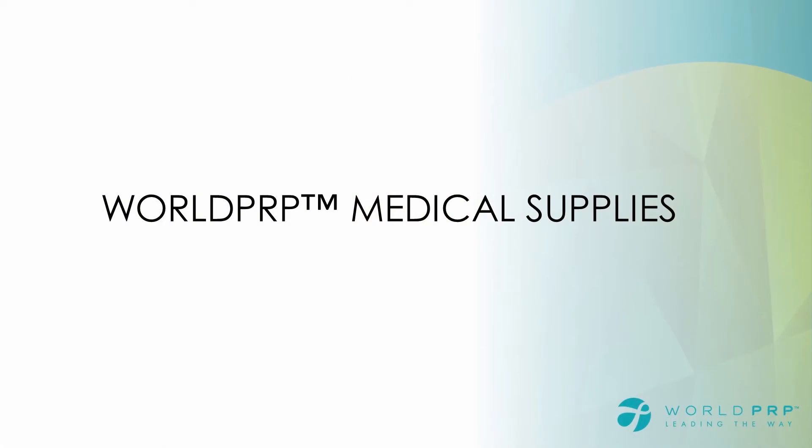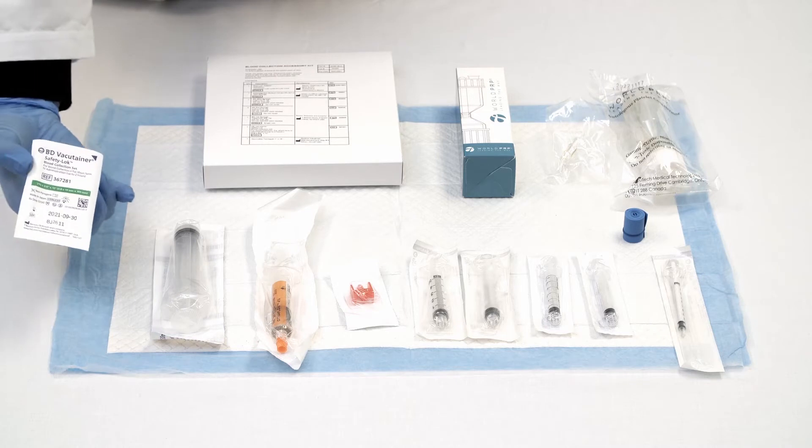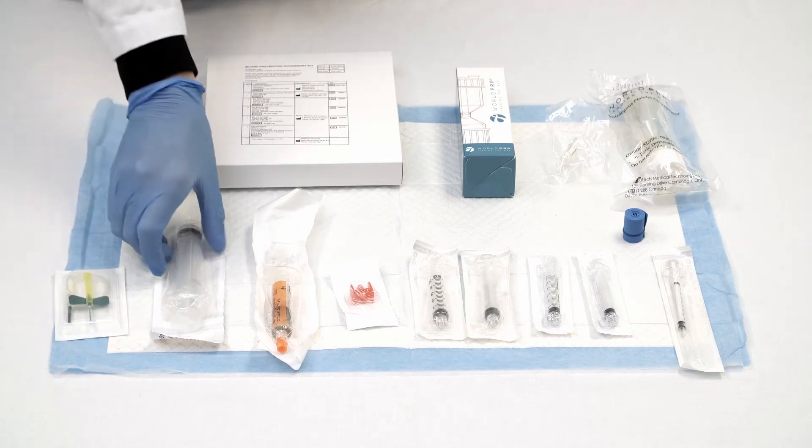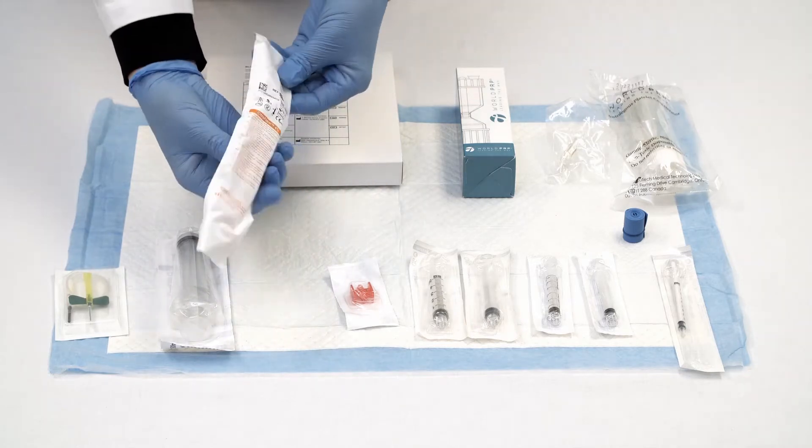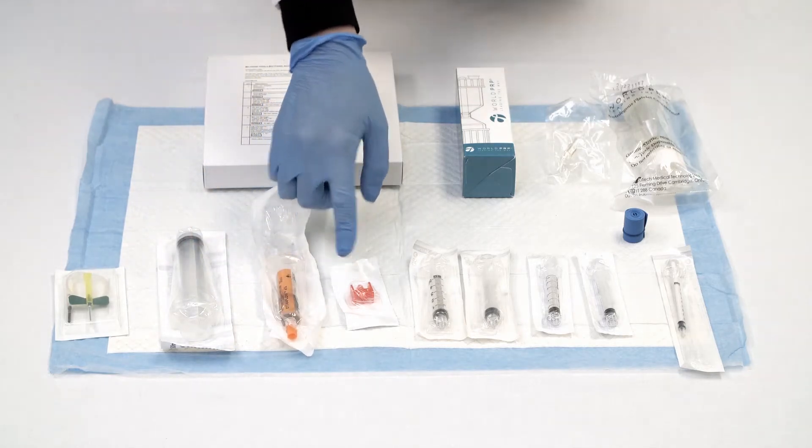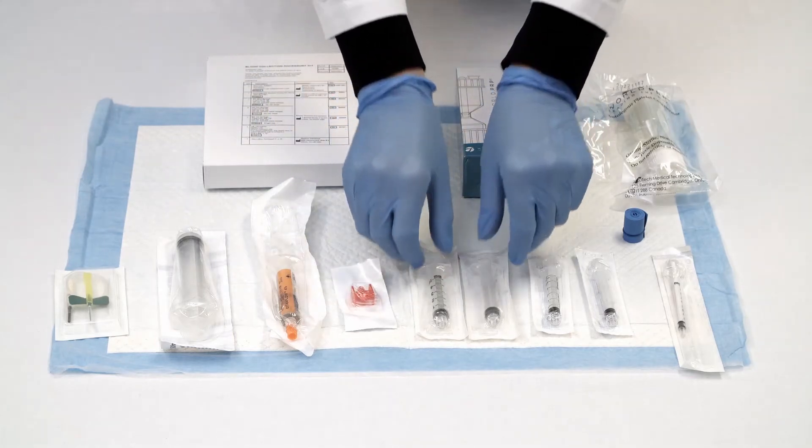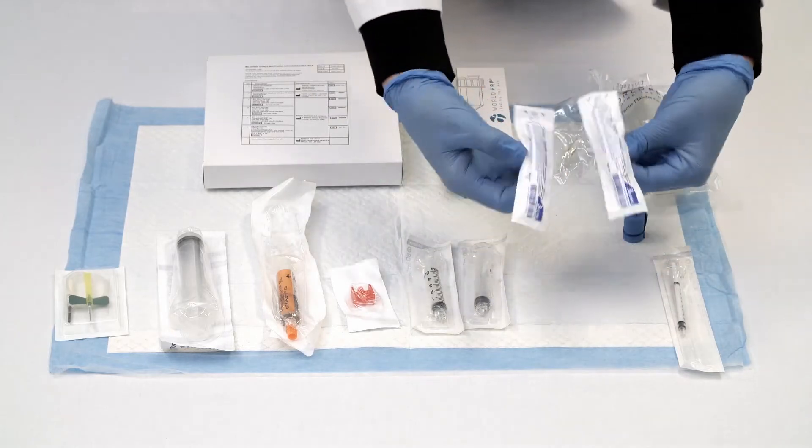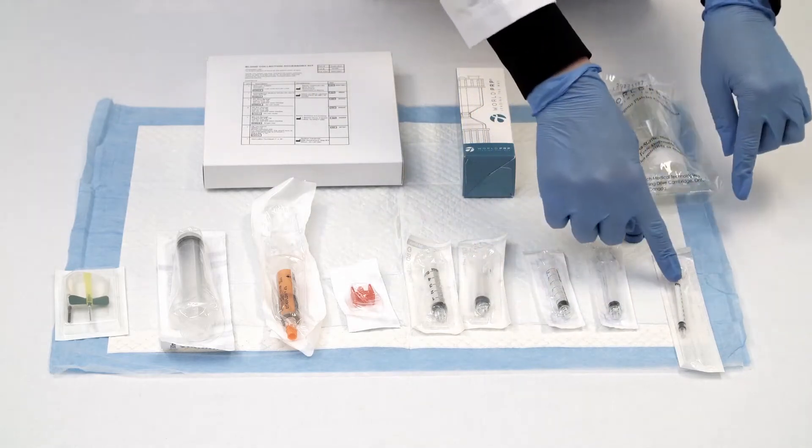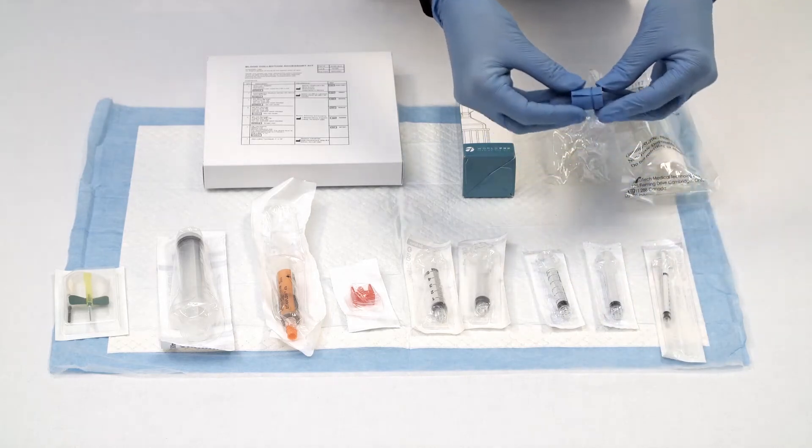I will now walk you through what is included in the blood draw kit. The blood draw kit includes a 21 gauge butterfly venipuncture, a 30 ml syringe, a 10 ml syringe of sodium citrate, the anticoagulant, red luer adapter, luer lock to luer lock tube connector, two 5 ml syringes, two 3 ml syringes, a 1 ml syringe, and a non-latex tourniquet.